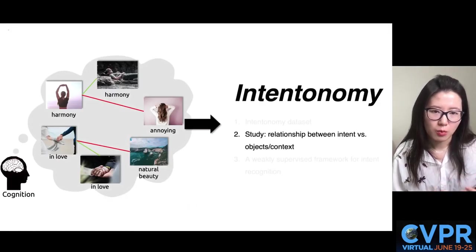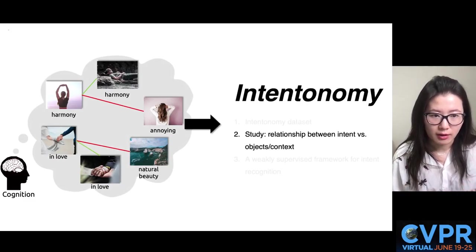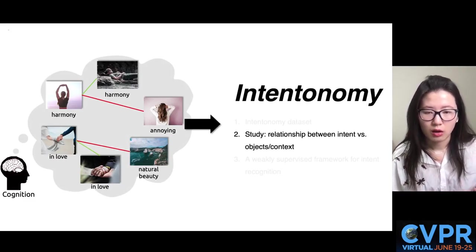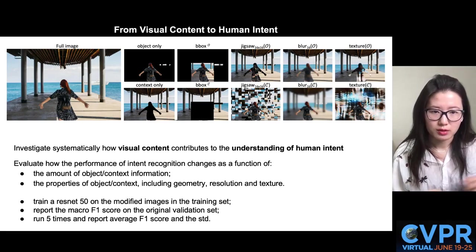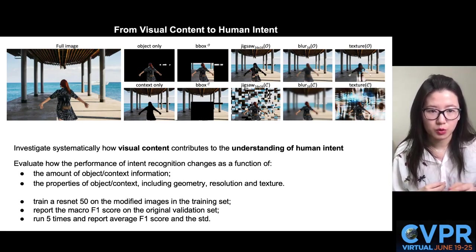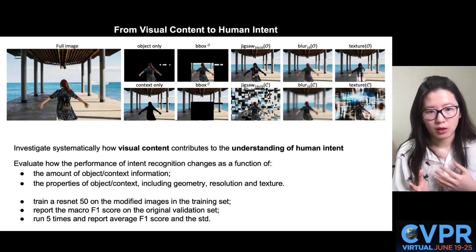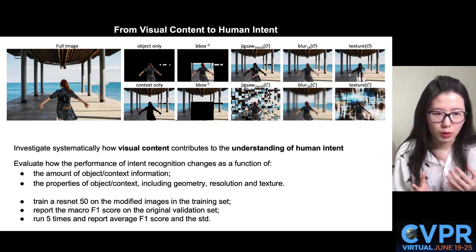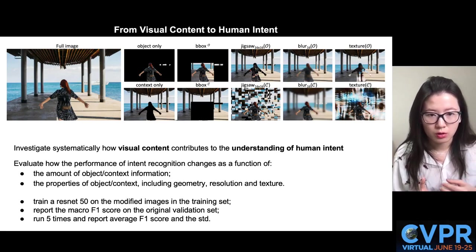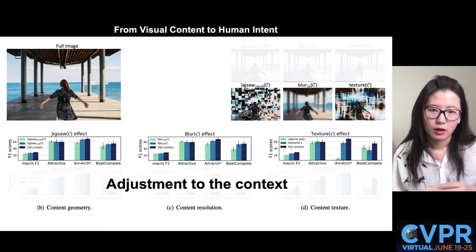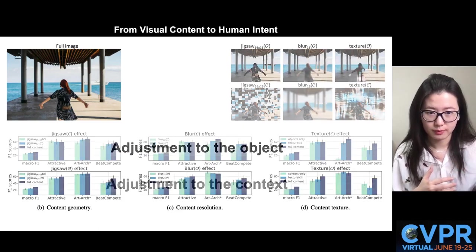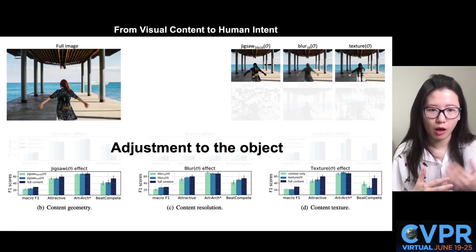The second component of this paper is a systematic investigation on how visual content contributes to the understanding of human intent. To this end, we disentangle the impact of visual content on intent classification by a series of controlled experiments. We modify the training images, train a ResNet-50 with them, and report the macro F1 score on the original validation set. The top half of the plot shows the results of context manipulation, and the bottom half shows object modification results.